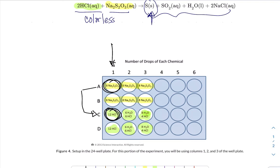You're looking at it from the top over the dark X, and as soon as the X is obscured, you're hitting the timer on your stopwatch and you're recording the number of seconds that that reaction took.